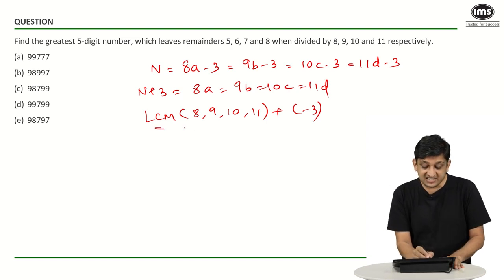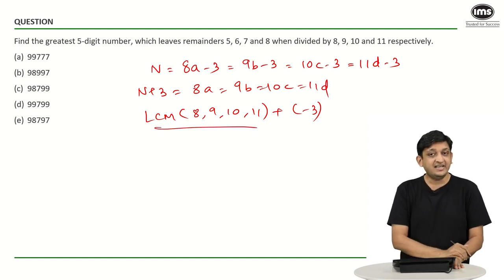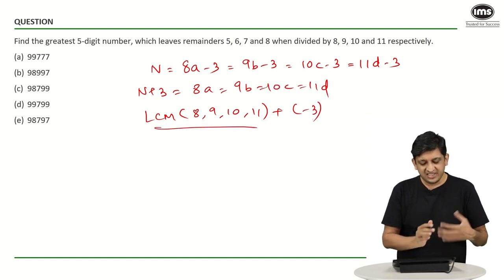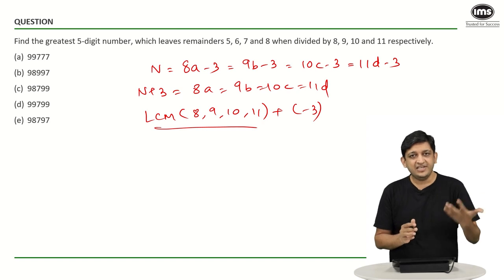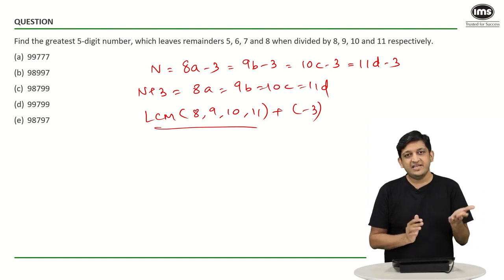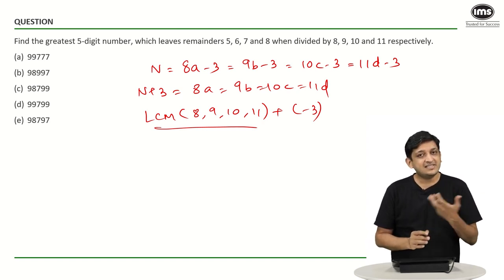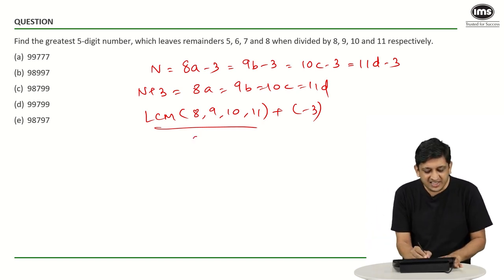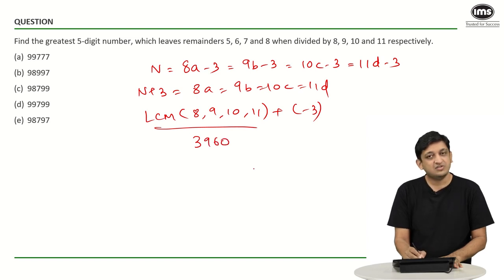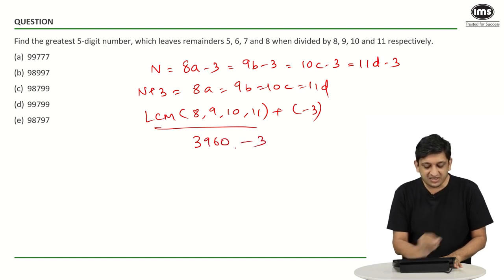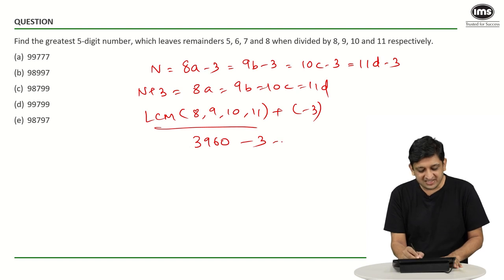What is the LCM of 8, 9, 10, and 11? The LCM of 8 and 9 is 72. 72 and 10 gives 360. 360 and 11 gives 3960. So the smallest such number will be 3960 minus 3, which equals 3957.